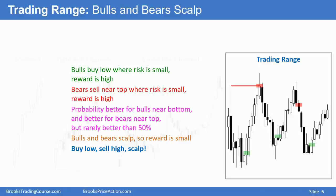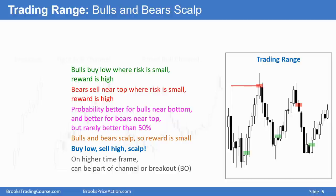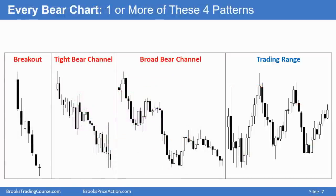On a higher timeframe chart, a trading range can be part of a trend, part of a channel, or part of a breakout on a high enough timeframe chart. Again, every trend is made of one of these four components. I just talked about bull trends, and now I'm going to be talking about bear trends. And the same thing applies — every bear trend is made of one or more of these four components.